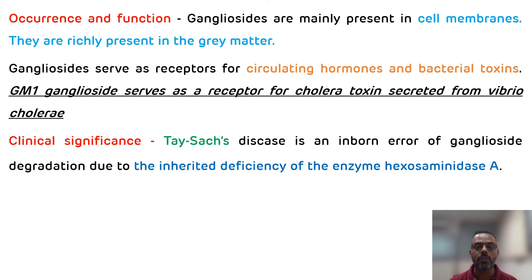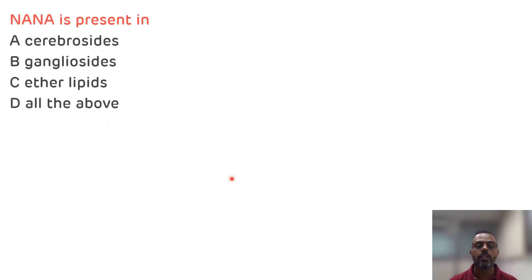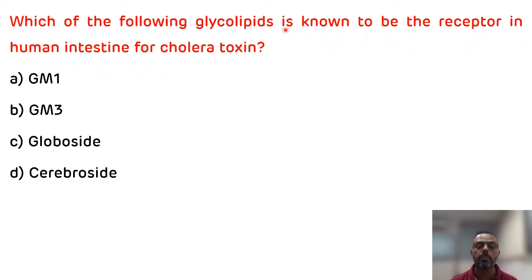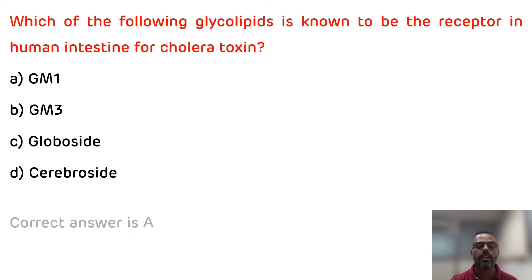Now for multiple choice questions. First question: NANA (N-acetylneuraminic acid) is present in — options: cerebrosides, gangliosides, glycolipids, or all of them. N-acetylneuraminic acid, also known as sialic acid, is present in gangliosides. The correct answer is B. Second question: which glycolipid is known to be the receptor in the human intestine for cholera toxin? Options: GM1, GM3, globoside, or cerebroside. GM1 ganglioside is the receptor for cholera toxin. The correct answer is A.